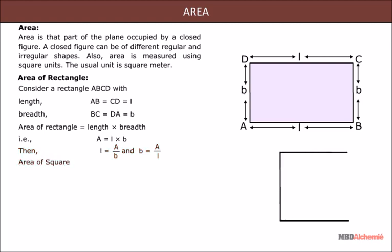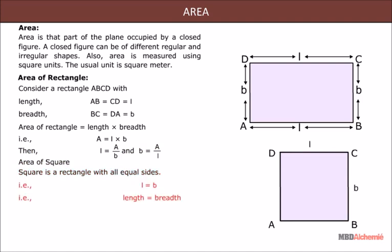Area of Square: A square is a rectangle with all sides equal, that is, length equals breadth. So, the area of a square equals side times side, that is, A equals side squared. Therefore, side equals the square root of the area.